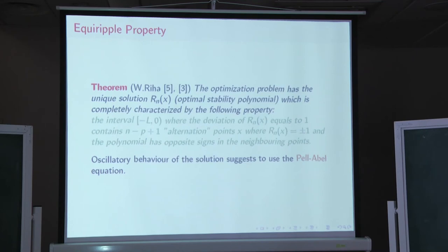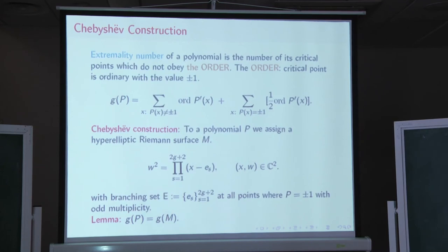And the oscillatory behavior of the solution, which means that the solution looks like a wave of constant amplitude on the stability domain, on stability segment here, that we can use Chebyshev theory that is rewriting this problem in terms as a certain functional equation. And the modern reading of this theory is this. Suppose we have a polynomial, and the polynomial has some critical points, that is, points where the derivative of this polynomial is equal to zero.